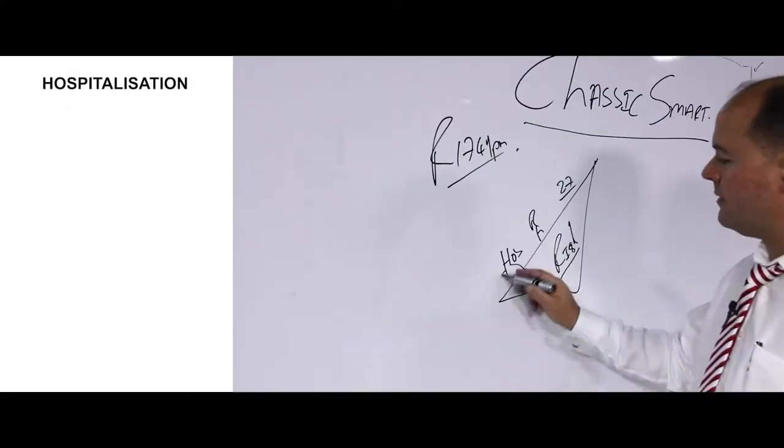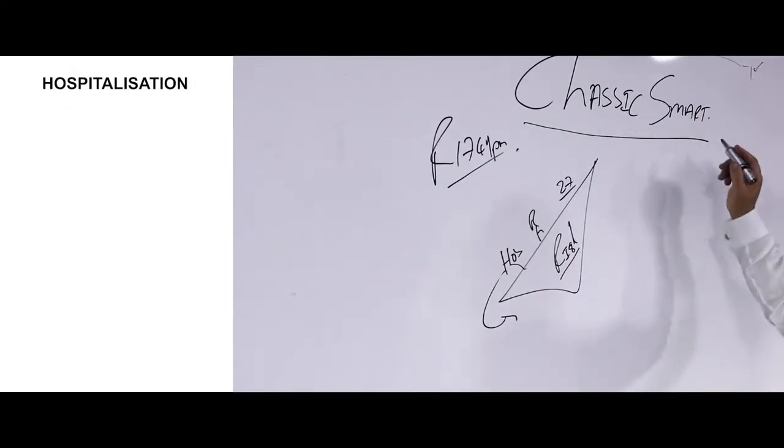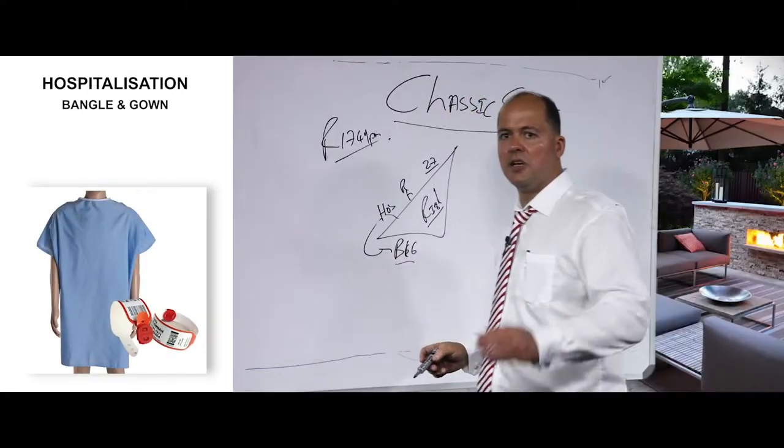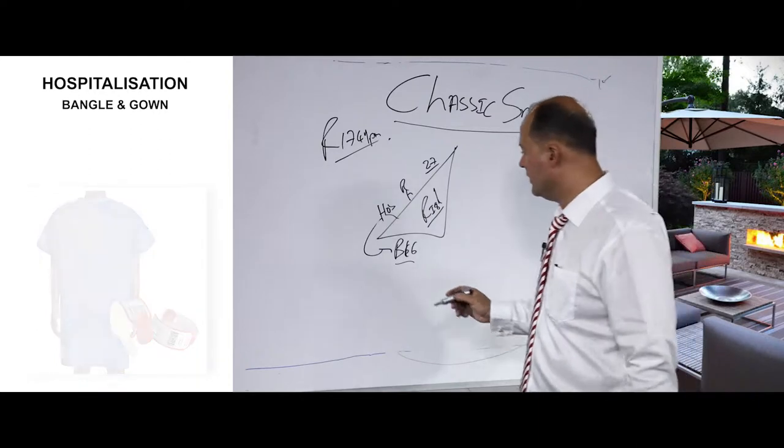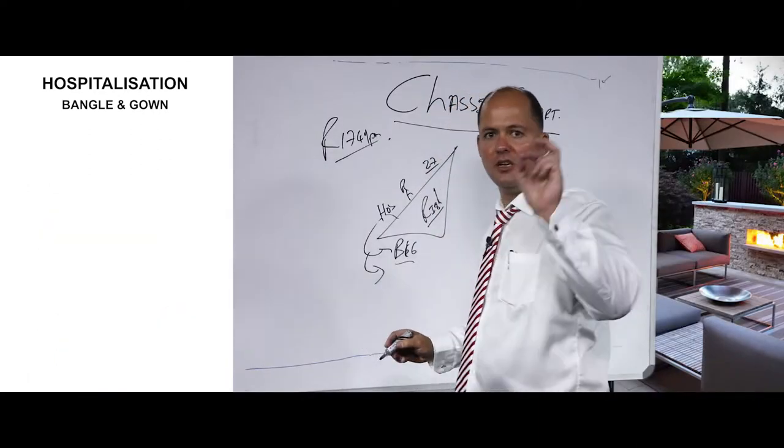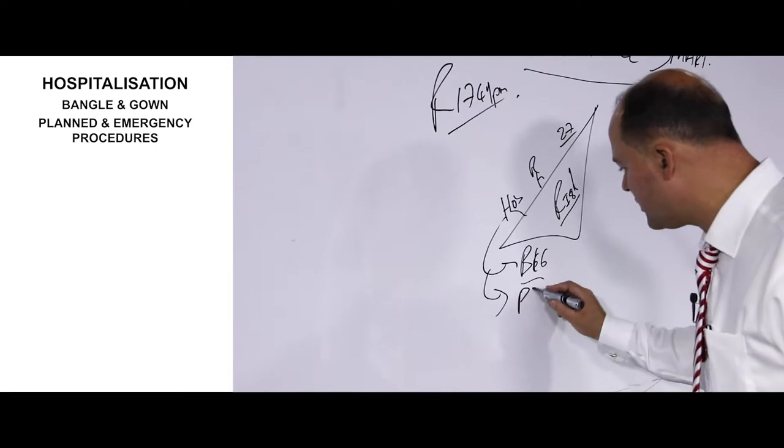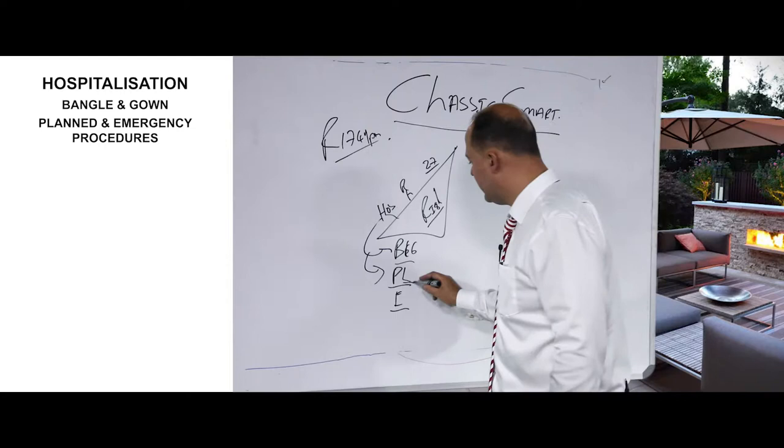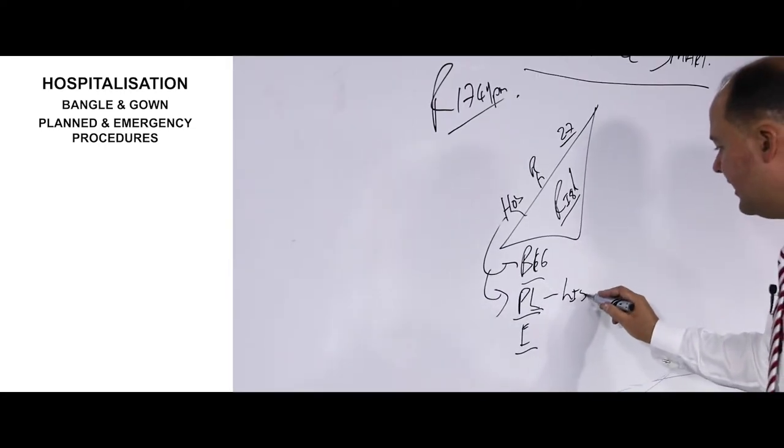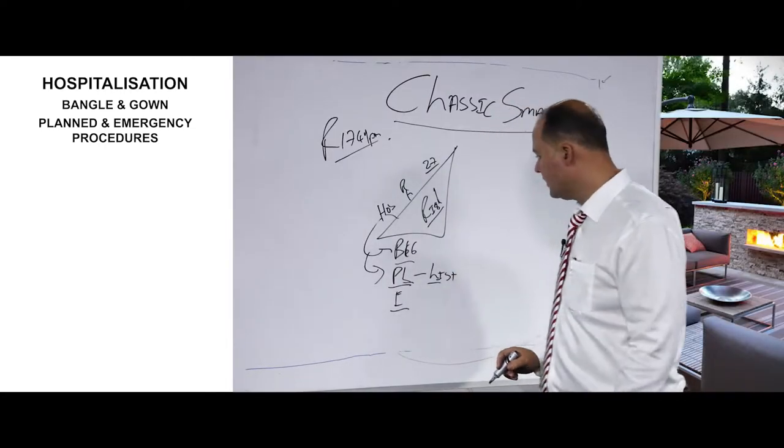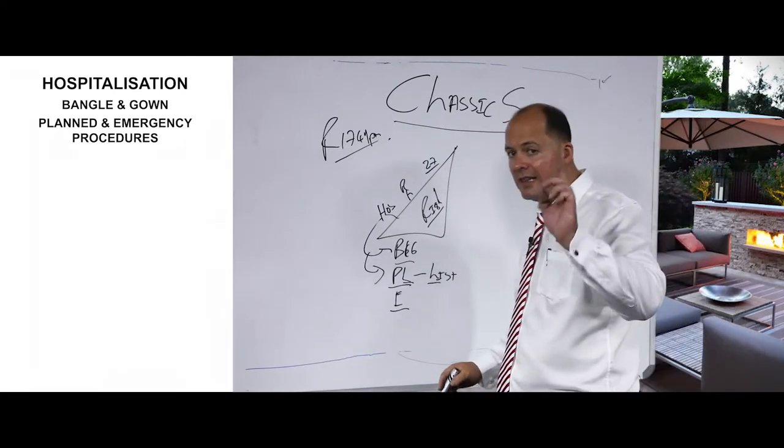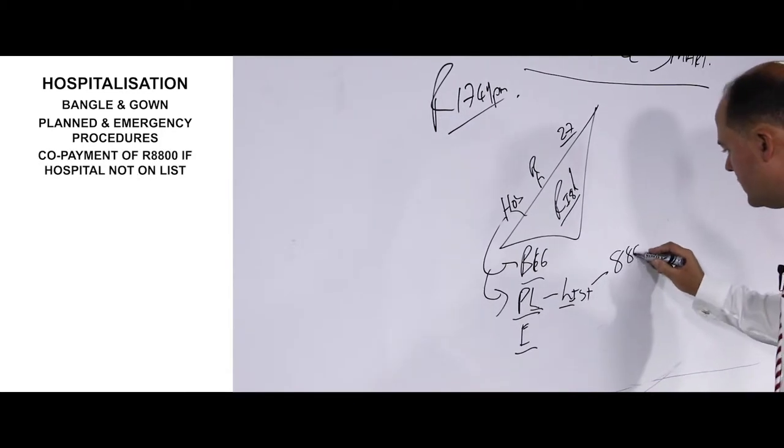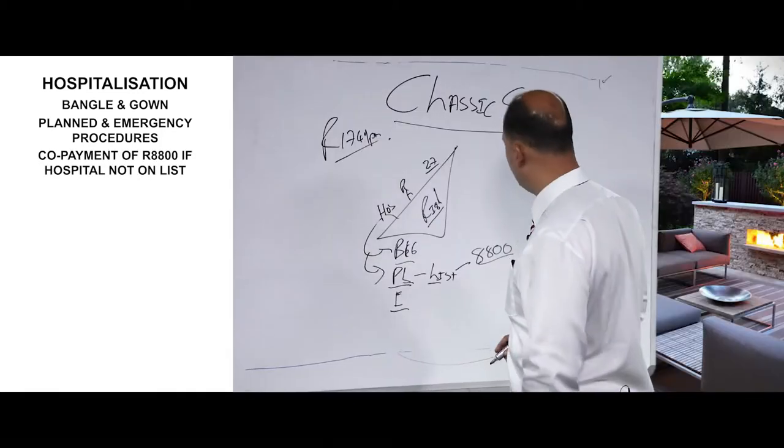In terms of hospitalization, very important on Classic Smart Plan is you will be covered for all authorized admittable procedures, meaning you're wearing a bangle and a gown. Number two, there's two types of hospitalization: hospitalization for planned procedures and hospitalization for emergencies. If it's a planned procedure, you must go to a list of hospitals. If you do not use the list of hospitals for planned procedures, there will be a co-payment of 8,800 rand per admission.